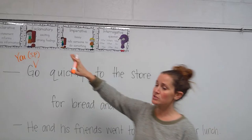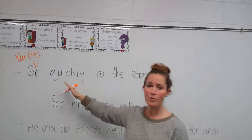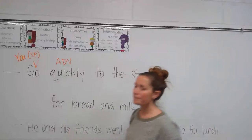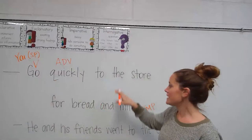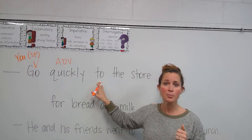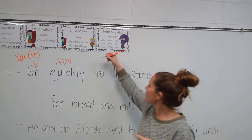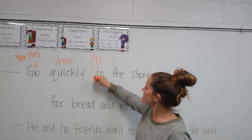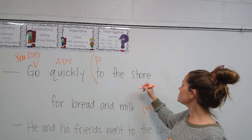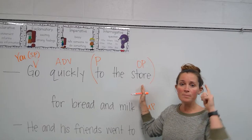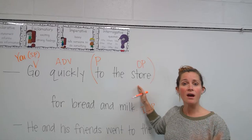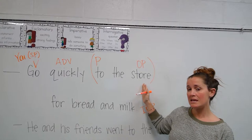The next question we ask involves adverb questions: how, when, and where. You go — how should you go? You should go quickly, so 'quickly' is our adverb because it describes or modifies our verb. Next, we recognize that 'to' is a preposition — we learned all our prepositions in Chapter 3. We ask: you go quickly to what? To the store. That is the object of our preposition, and there's our prepositional phrase. Remember, the object of the preposition can only be a noun. 'Store' is a person, place, thing, or idea, so we're set. And 'the' is an article adjective.